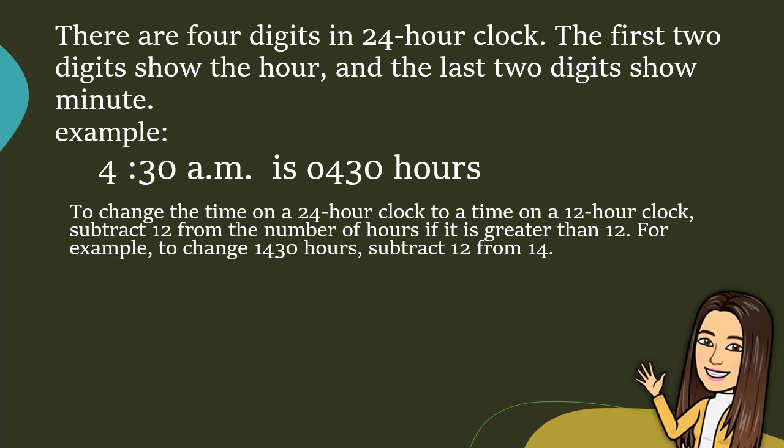For example, to change 14:30 hours, subtract 12 from 14. That is 14:30 minus 12, that's 2:30 or 0230. And that is 2:30 p.m. in 12 hour clock.